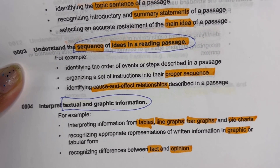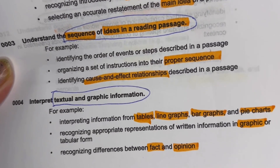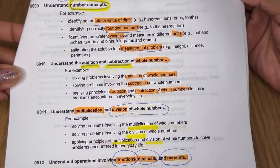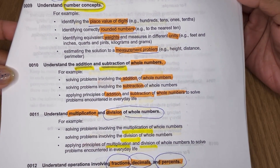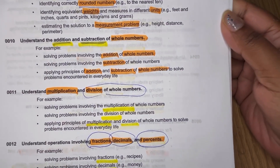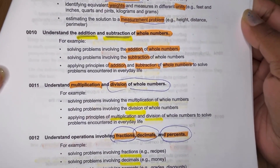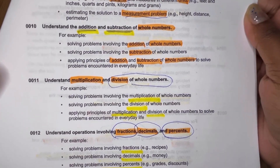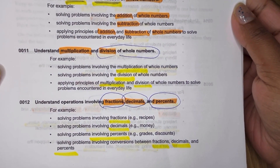In Mathematics, you need to understand number concepts — place value, digits, rounded numbers, ways and units of measurement. You should also understand addition, subtraction, multiplication, and division of whole numbers, fractions, decimals, and percentages.